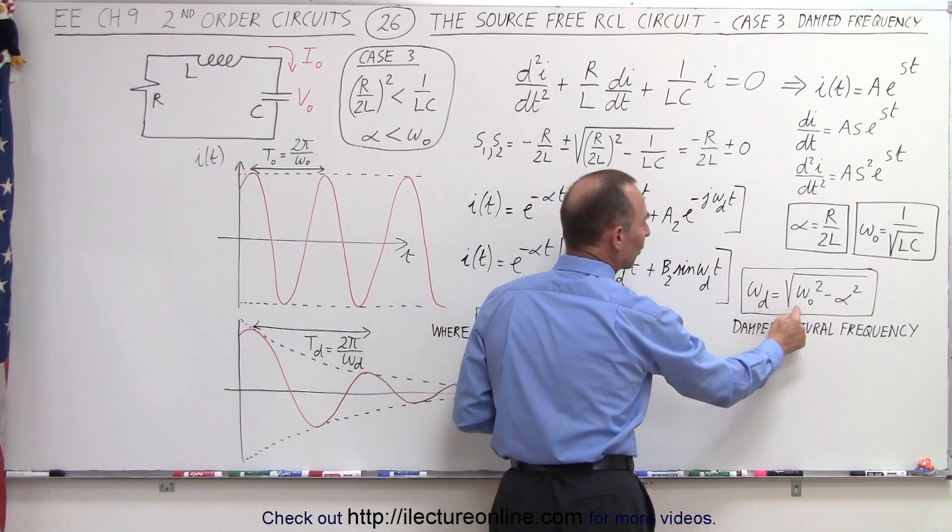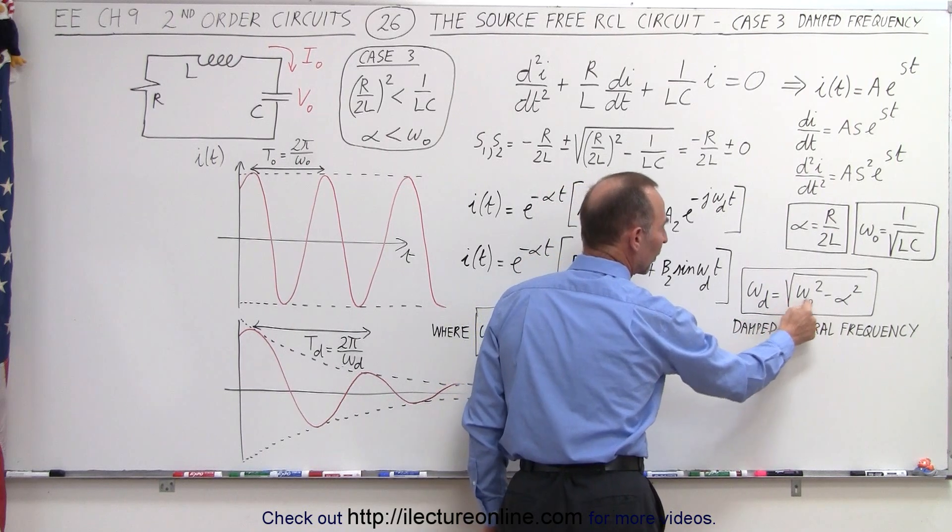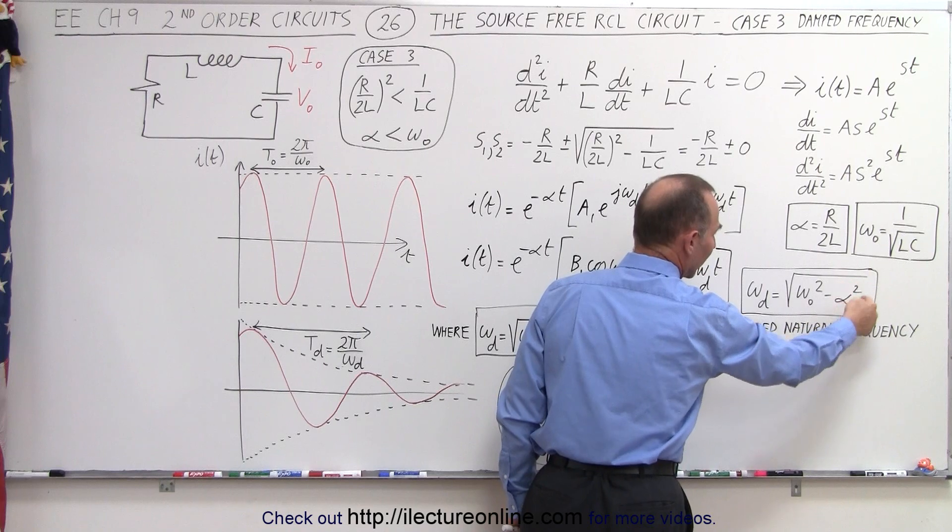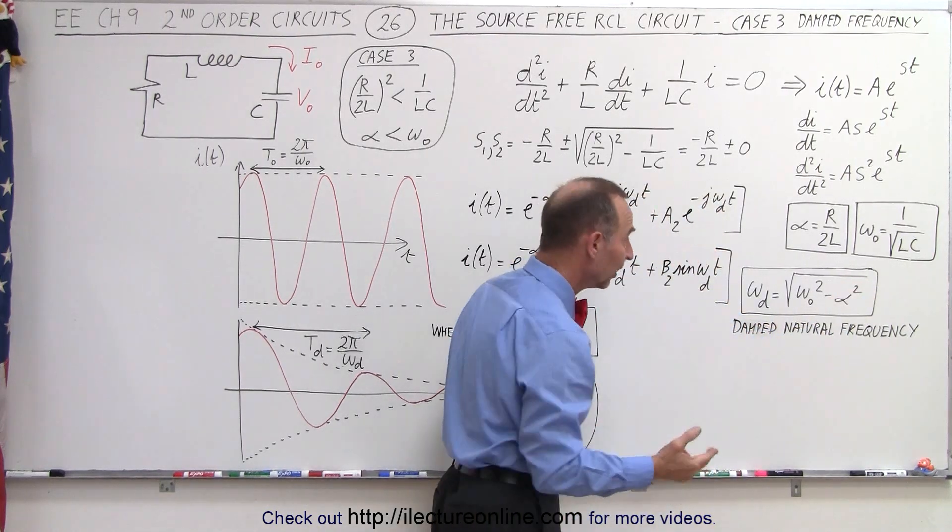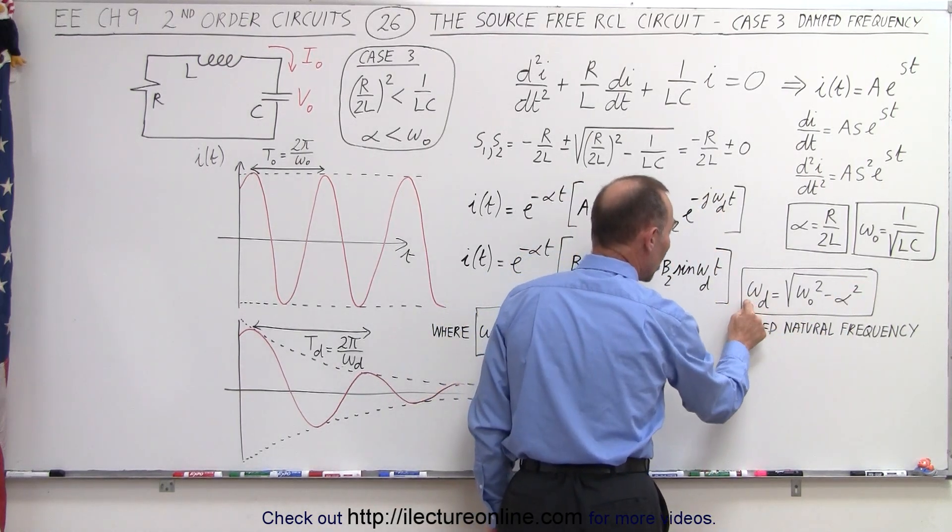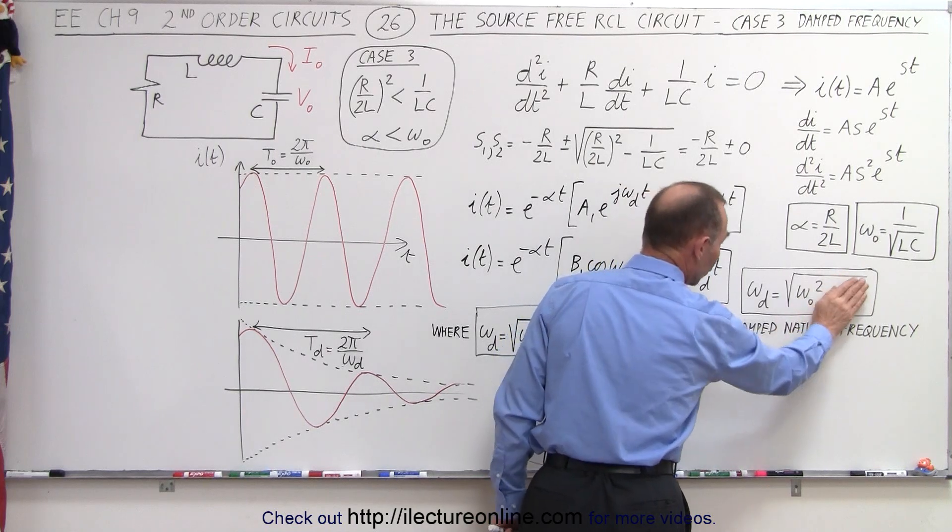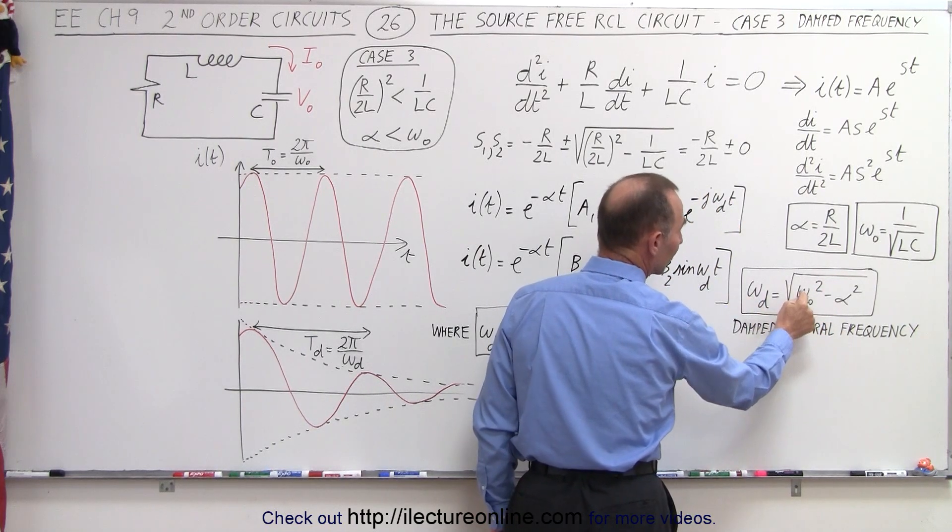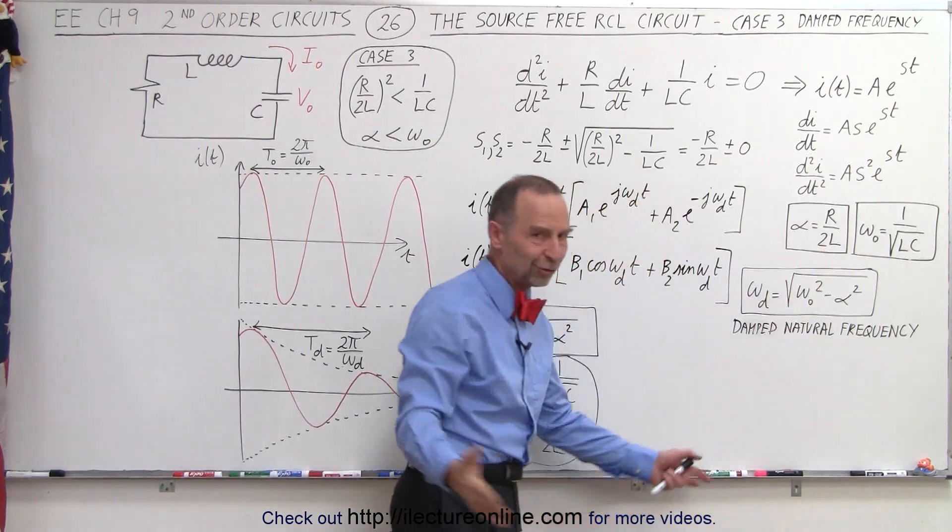Since this is always greater than 0 when there's a resistor, you can see that this will be a smaller quantity than the natural frequency. If there's no damping factor, if there's no resistor, then the damped natural frequency equals the natural frequency. Then there's no damping at all.